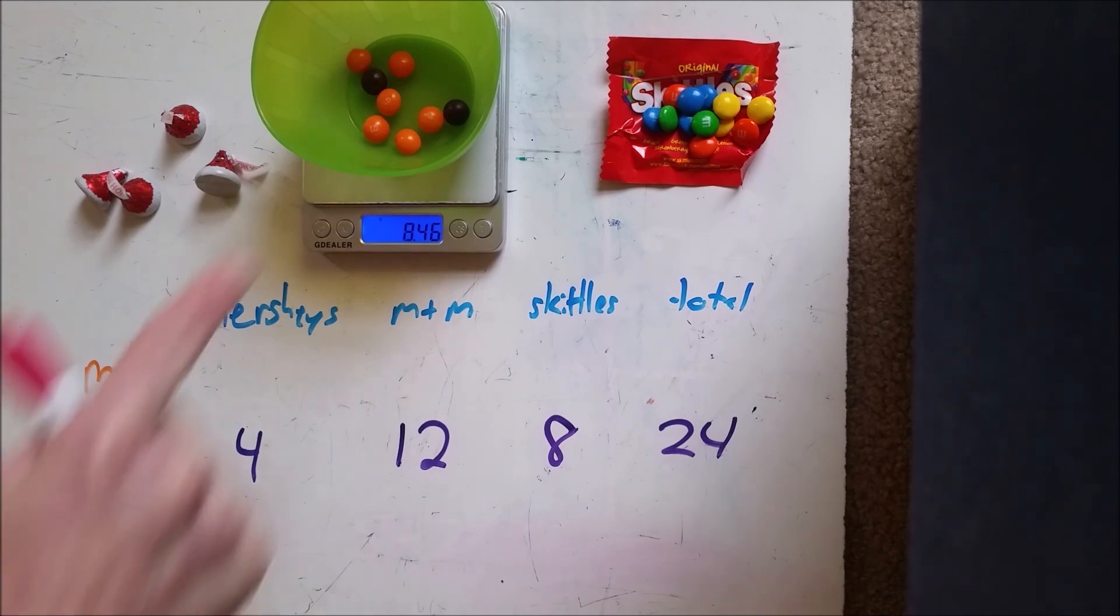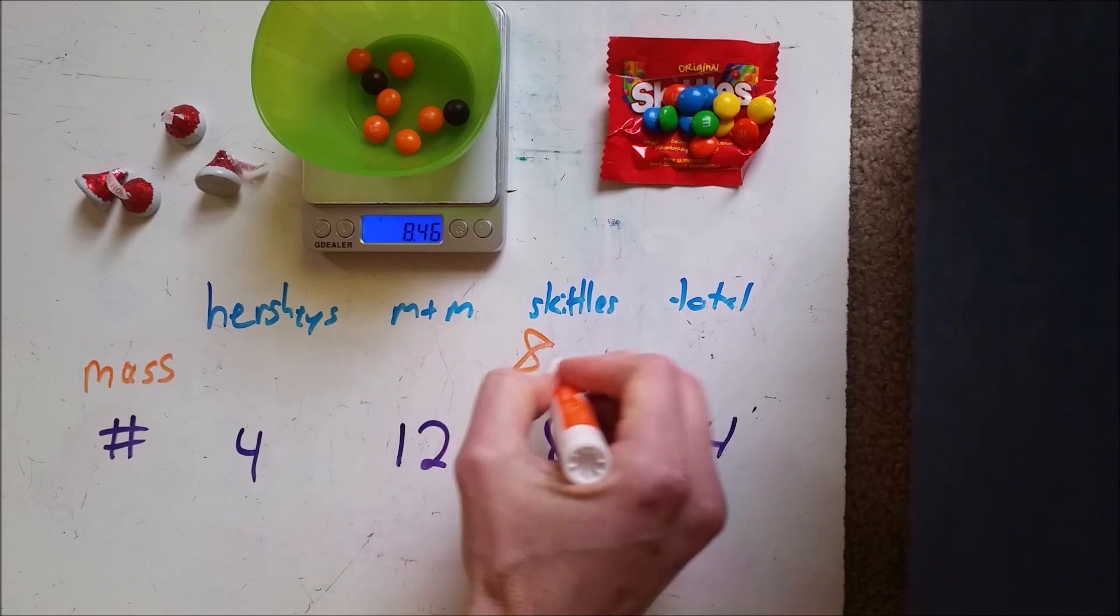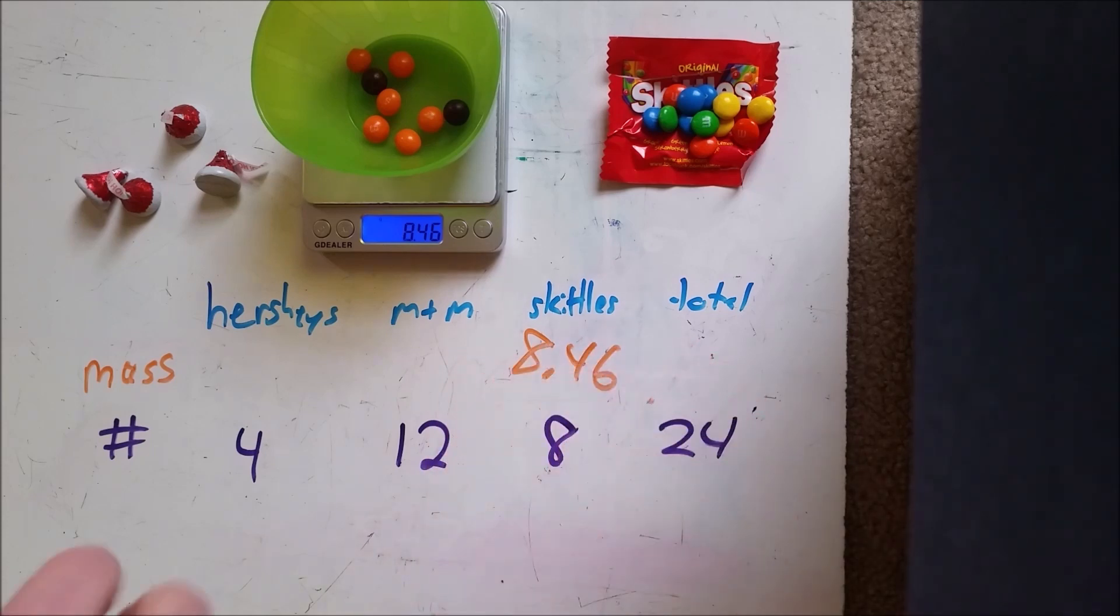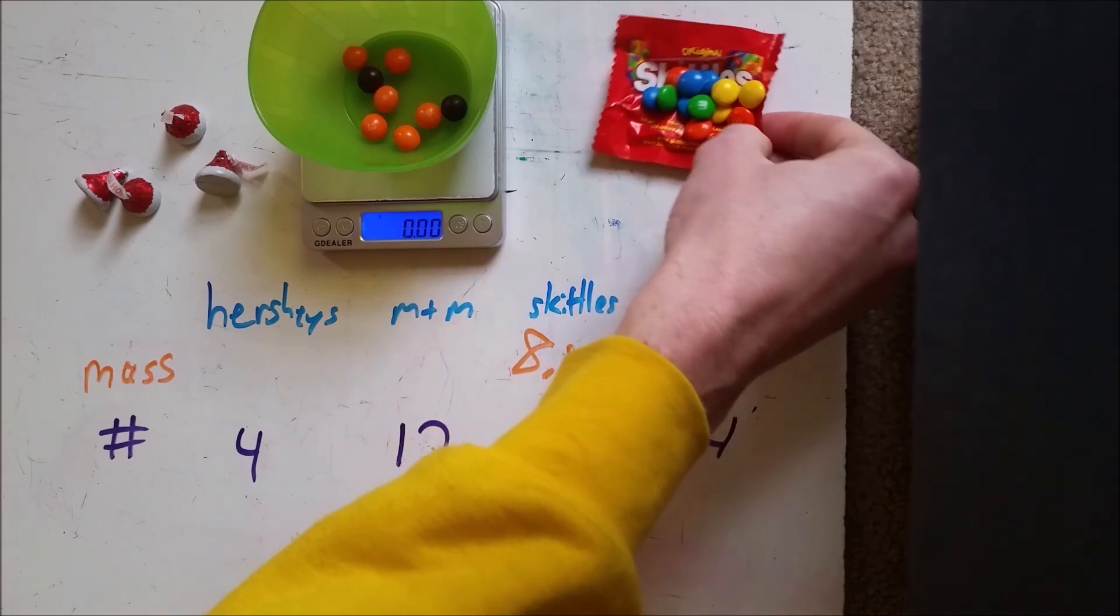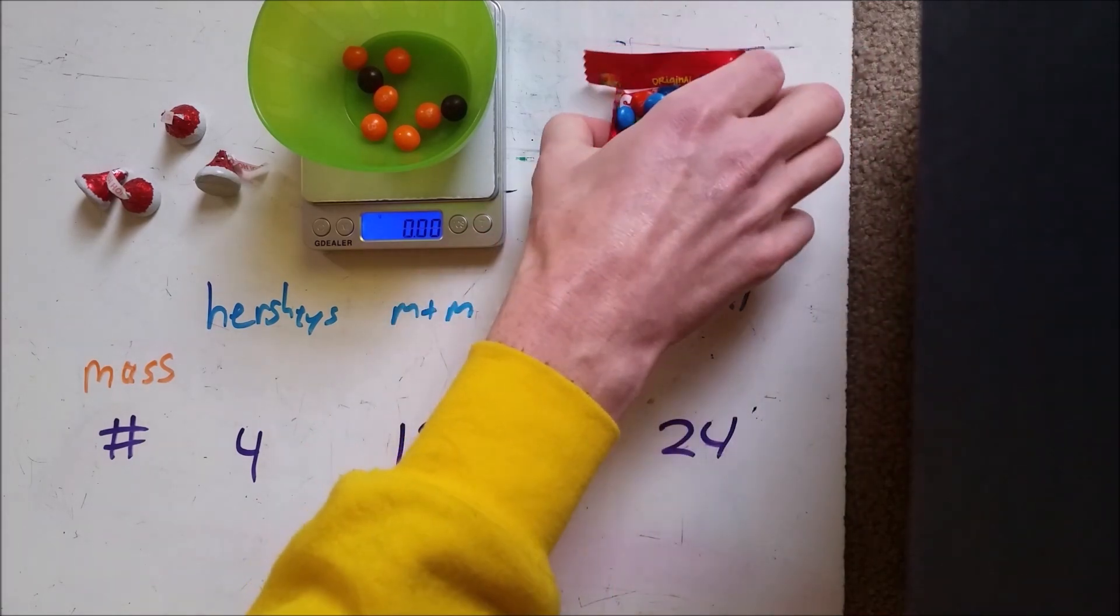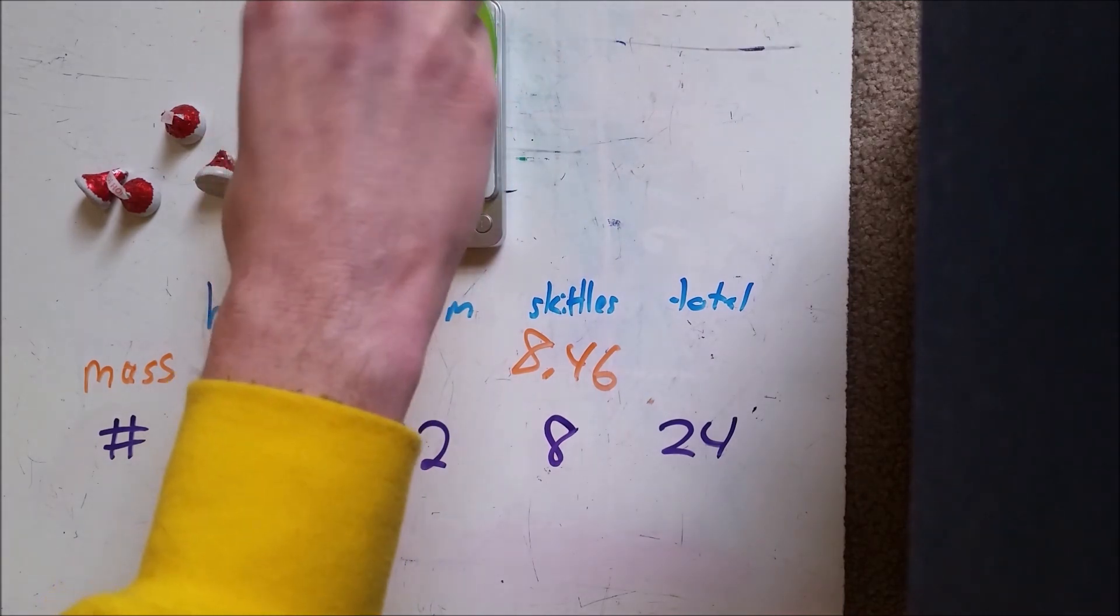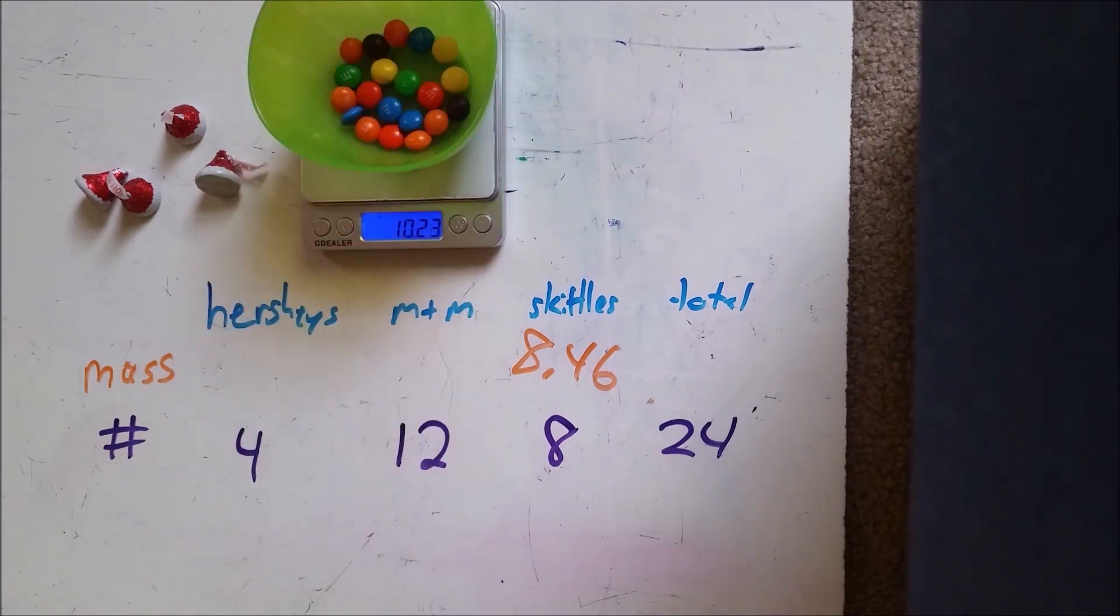Now the Skittles have a mass of 8.46 grams. I'm going to fill that into my chart here and then we're going to go ahead and zero that out. Carefully add these M&Ms to get the mass of those.